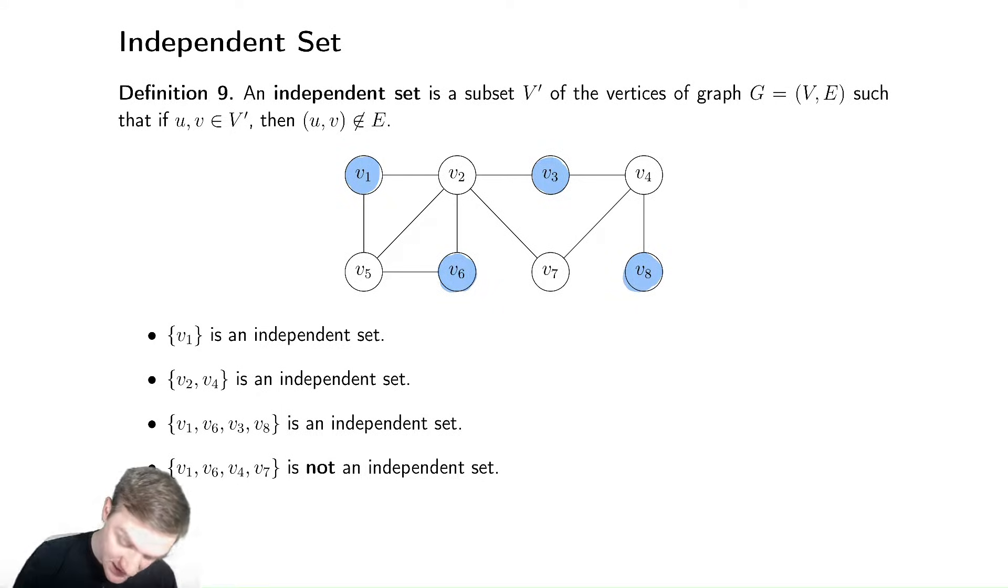Let's modify it slightly. Keep V1 and V6, but add V4 and V7. Now, oh no, this is not an independent set because there's this edge V4, V7. We can write this more mathematically: V4, V7 is in the set of edges.